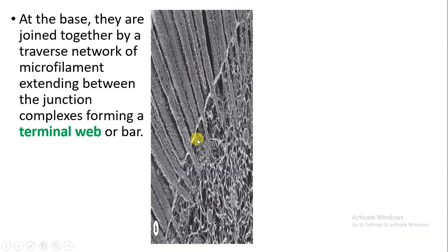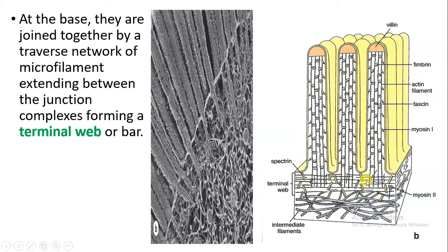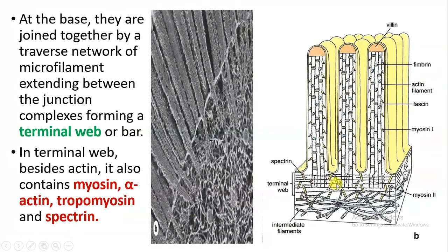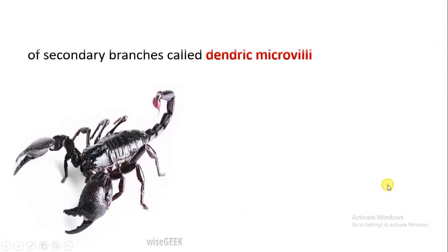At the base of the microvilli, a network crossband is formed. The microvilli are joined together by a traversed network of microfilaments which extend between the junction complexes and form a structure called the terminal web. Besides actin, the terminal web contains myosin, alpha-actin, tropomyosin, and spectrin.